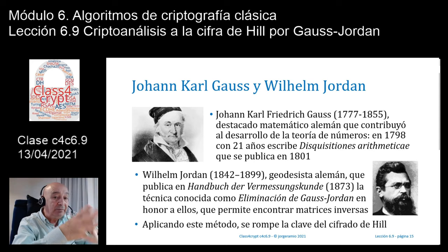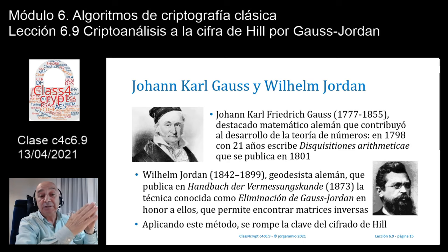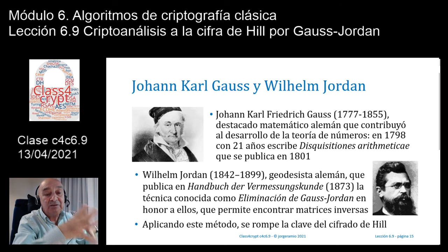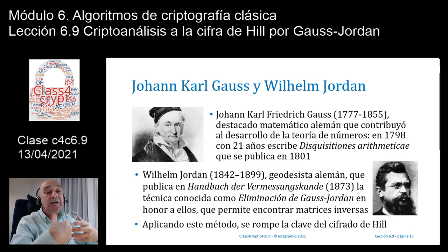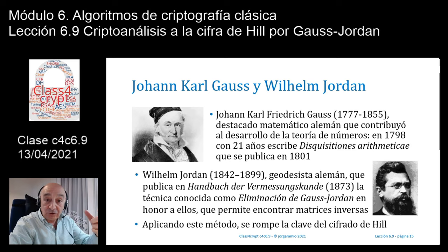Gauss y Jordan permiten hacer operaciones sobre un conjunto de dos matrices para forzar que en una de ellas aparezca una matriz de identidad que contiene los vectores unitarios. Lo que necesito es tener texto en claro y su correspondiente criptograma, pasar a la codificación numérica —A es 0, B es 1, Z es 26 en módulo 27— y hacer un conjunto de operaciones para llegar a esa matriz de identidad, encontrar los vectores unitarios, y así romper la clave.